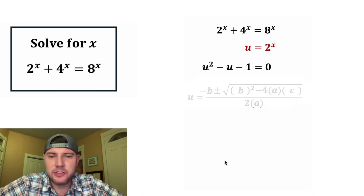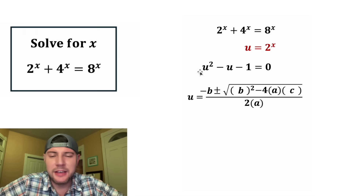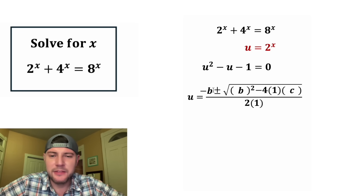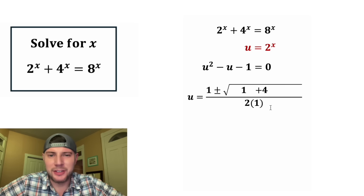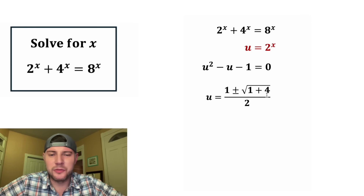From here, there's no way we're going to factor this, so let's use the quadratic formula. a equals 1, b equals negative 1, and c equals negative 1. Plugging in: negative b is negative negative 1, which is positive 1. Negative 1 squared is 1, and negative 4 times 1 times negative 1 is positive 4, and 2 times 1 is 2. So 1 plus 4 equals 5, and we get u equals 1 plus or minus the square root of 5, all over 2.